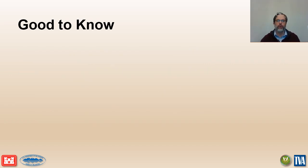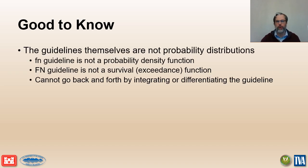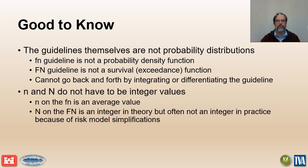Here are two more things to know about the risk plots. First, the guidelines themselves are not probability distributions, meaning the guidelines are not interchangeable — the little fn guideline cannot be directly derived from the big fn guideline by taking a derivative, and vice versa. Second, little n and big N do not necessarily have to be integer values. By definition, little n is an average value and averages do not have to be integers. Although big N represents an estimate of actual life loss for a specific failure event, risk model simplifications commonly result in non-integer values for big N.